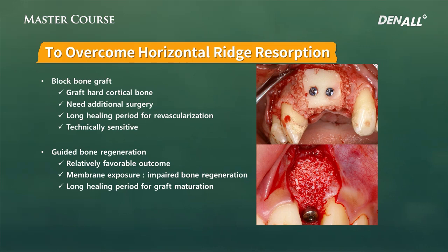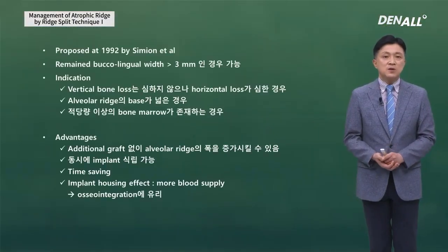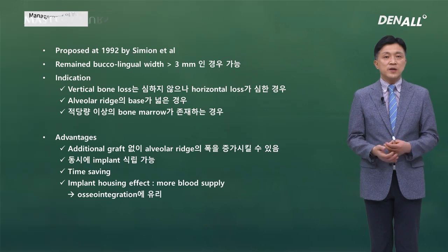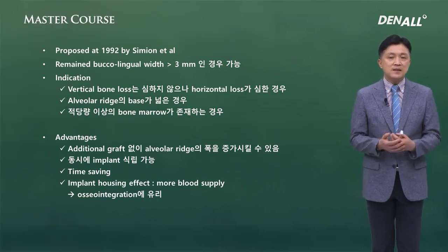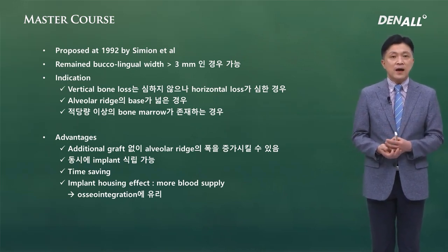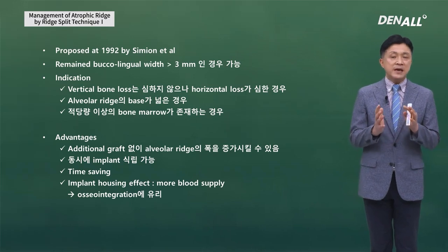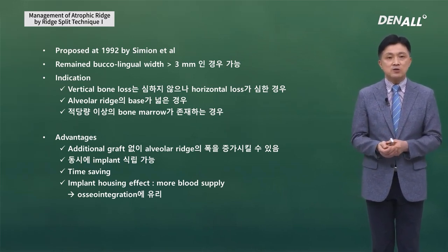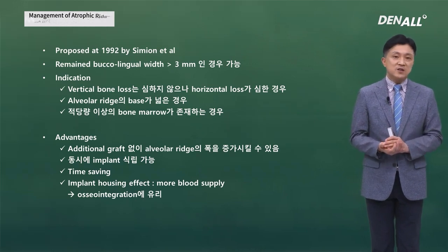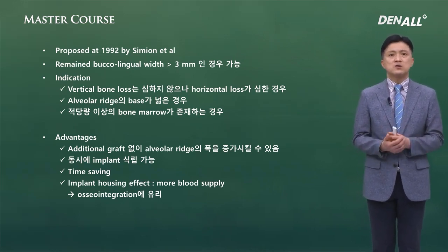In certain cases we can do ridge split osteotomy. It was first introduced by Simeon in 1992. The remaining buccal-lingual width needs to be over 3 mm. The indication is when there is severe horizontal loss but not severe vertical bone loss, a wide alveolar ridge base is needed, and there needs to be a sufficient amount of bone marrow. If there is too much cortical bone, it is not fit.